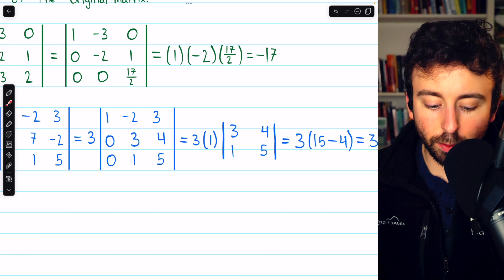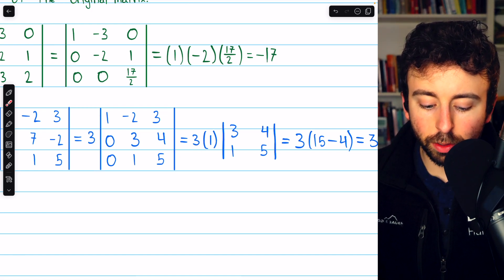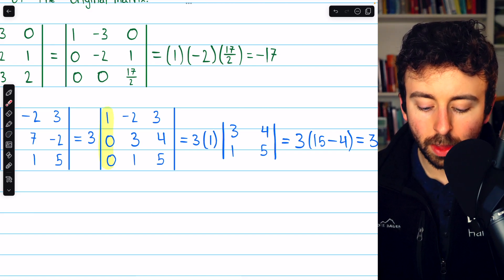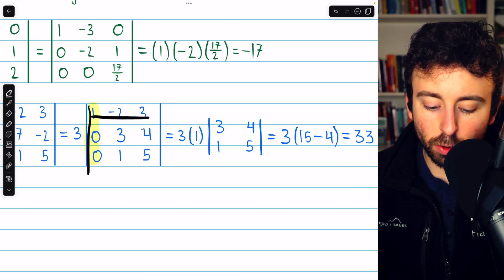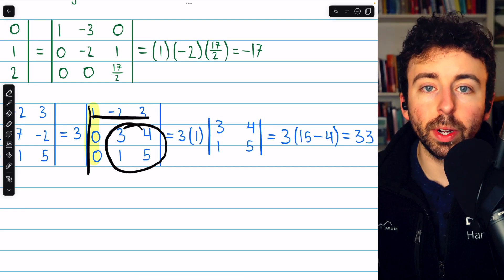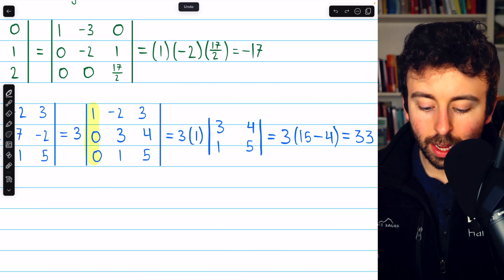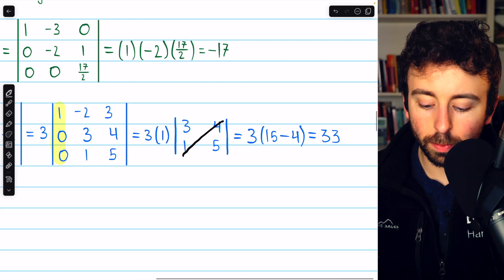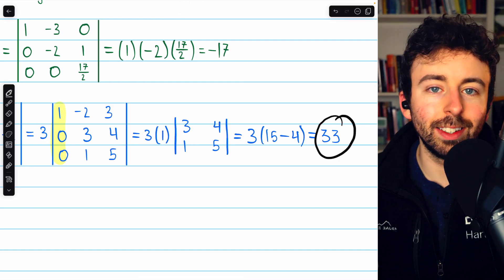So the determinant we're looking for is three times this determinant, so there's our factor of three, and then doing cofactor expansion along the first column, we get one multiplied by the determinant of the submatrix that remains when one's row and column are deleted, so that's this determinant you see here. And that's easy to calculate, it's just 15 minus four, so 11. So three times 11, and 33 is the determinant.